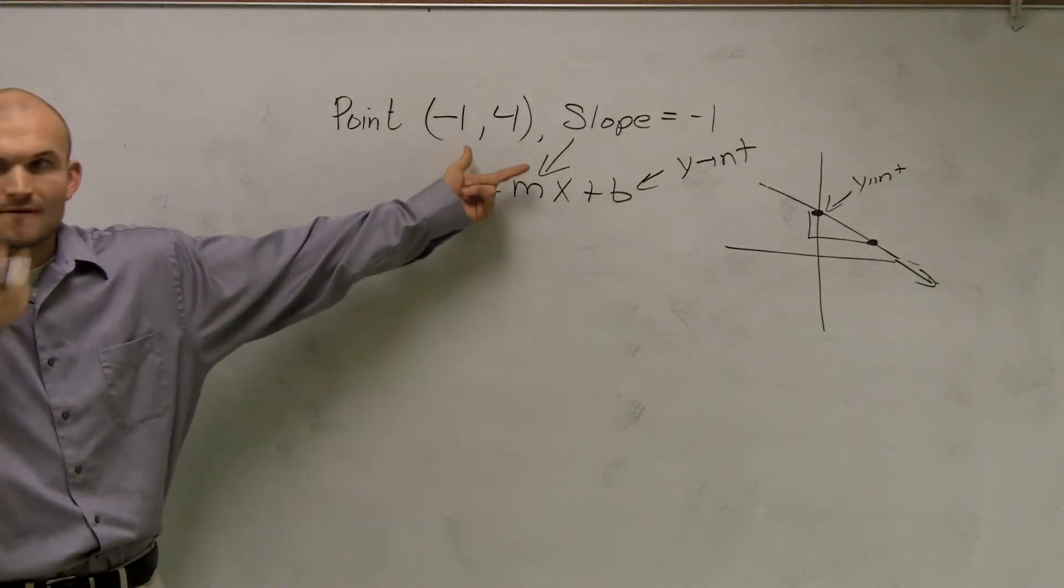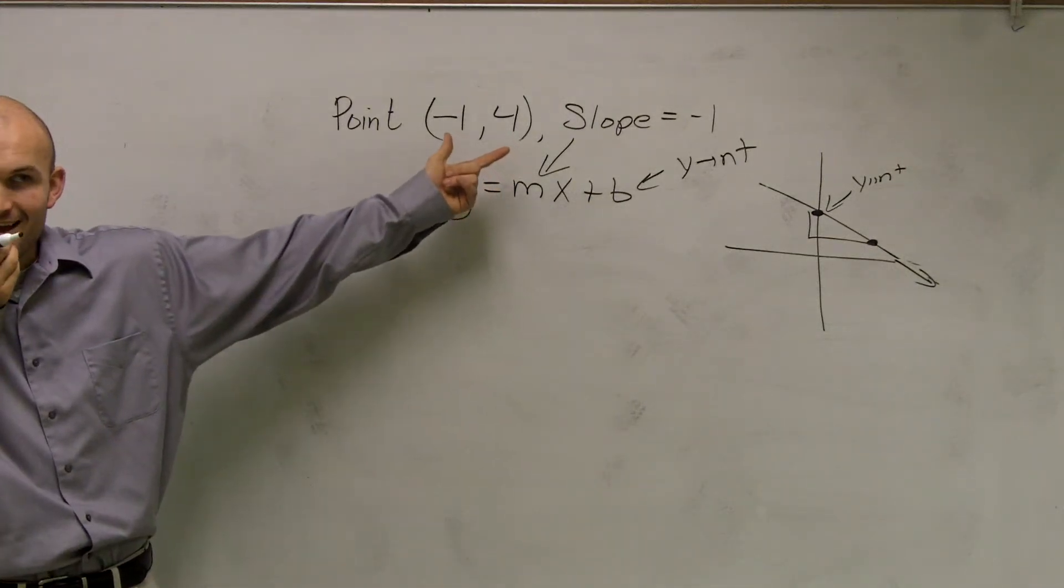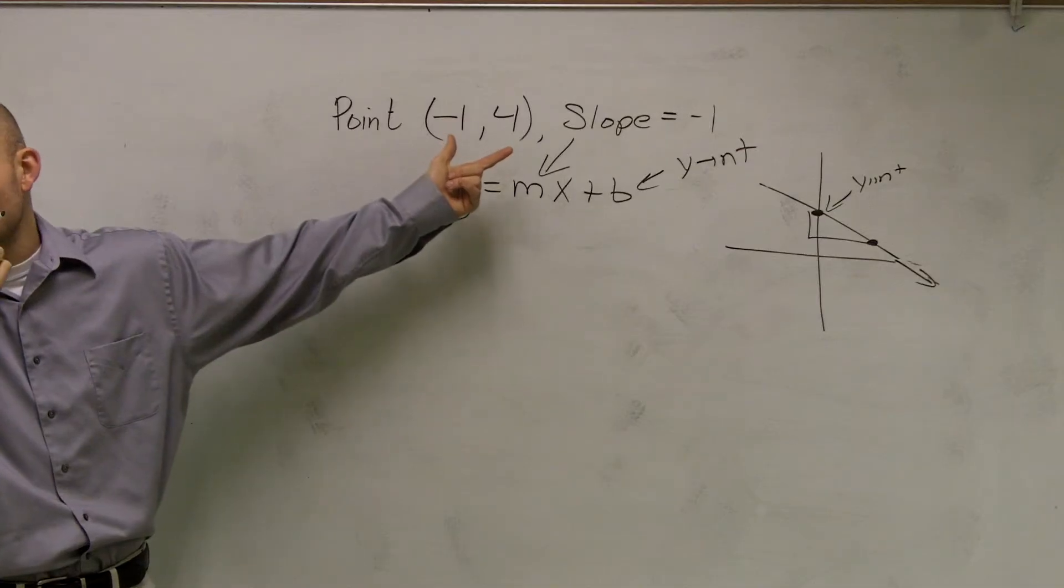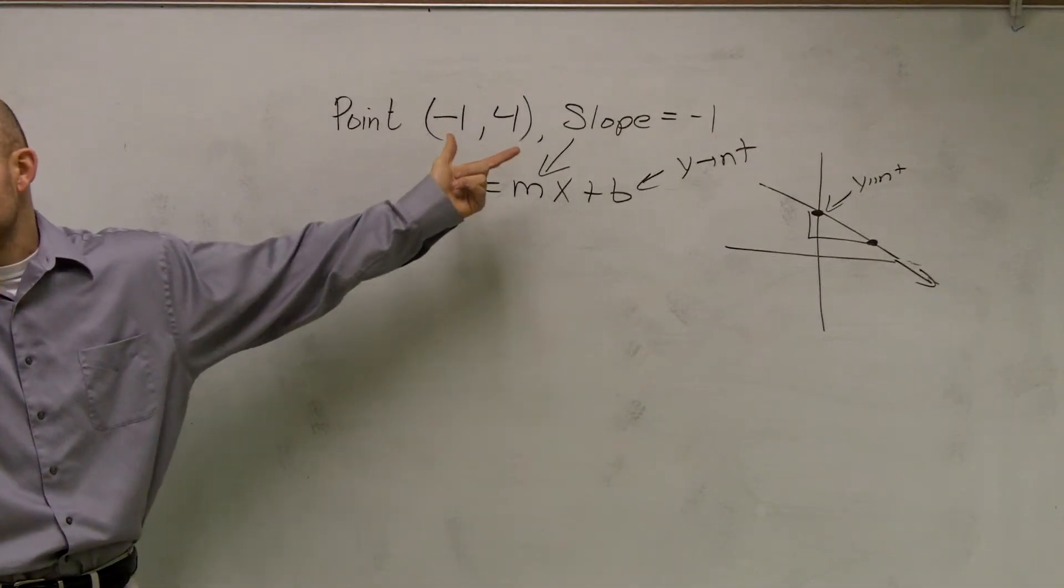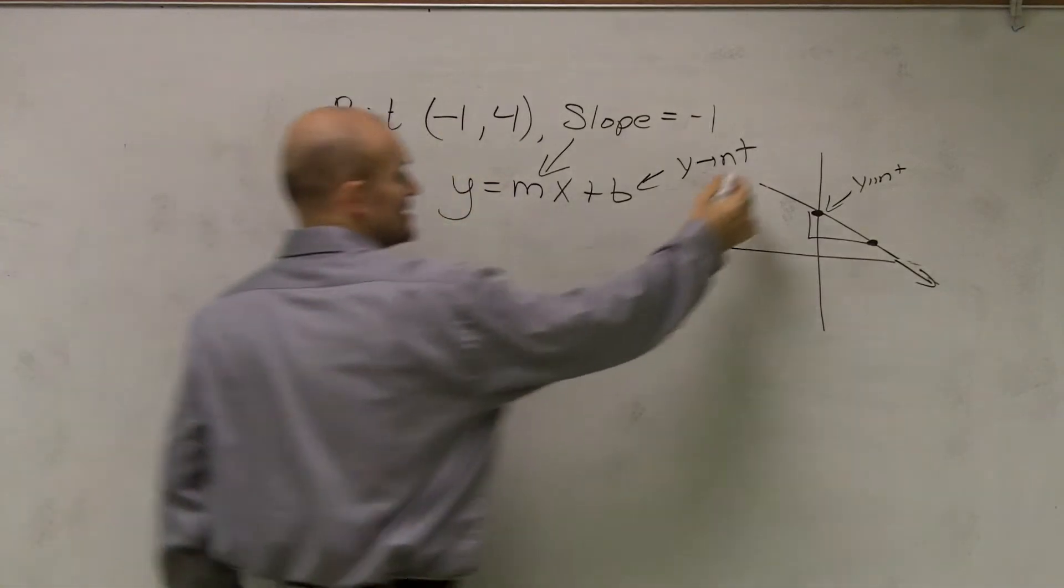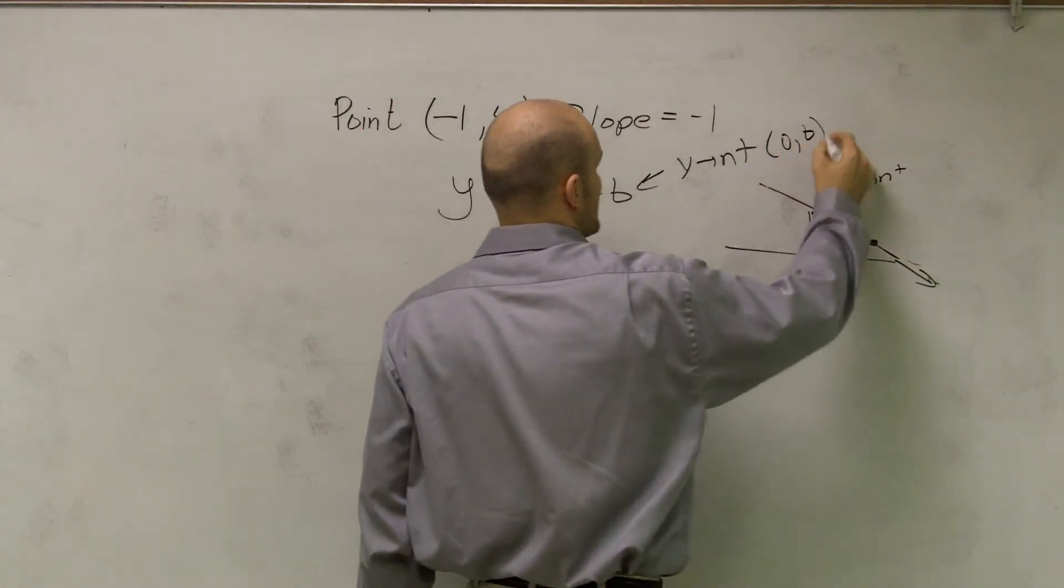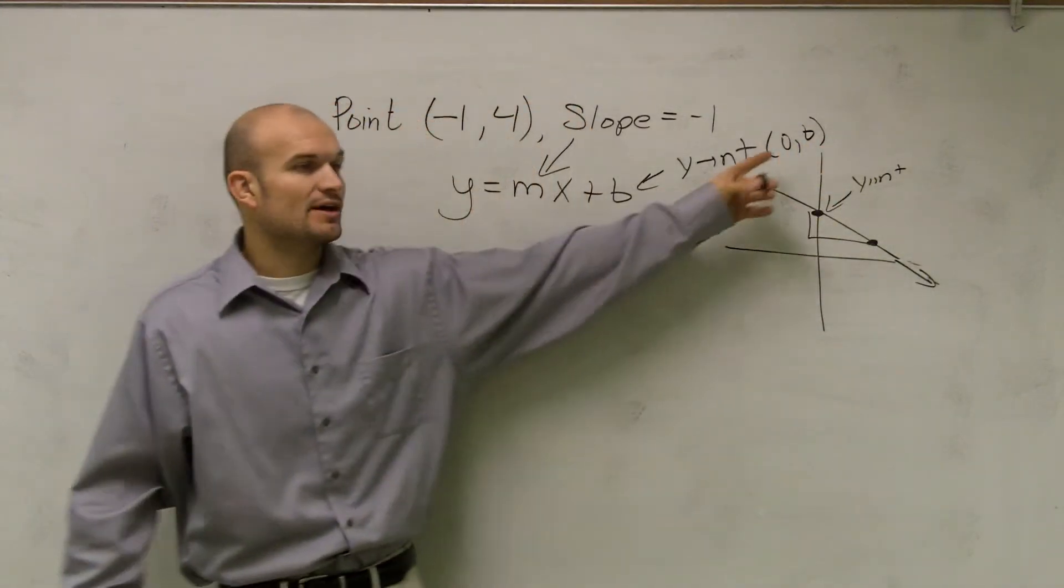Is this point our y-intercept? Bleh. Is it? No. And remember, our y-intercept is when x is equal to 0, right? Yes. Our y-intercept is at 0 comma b. So your x value has to be 0.